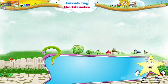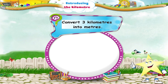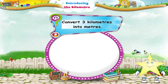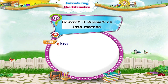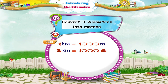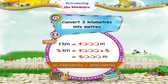Let us solve another example. Convert three kilometres into metres. One kilometre equals one thousand metres, so three kilometres equals one thousand into three, which is three thousand. So three kilometres equals three thousand metres.